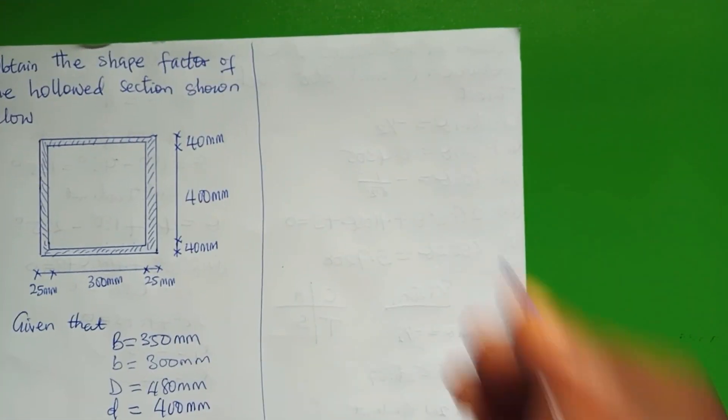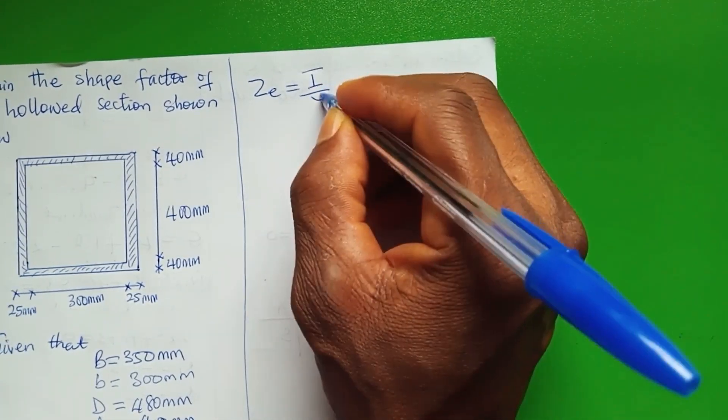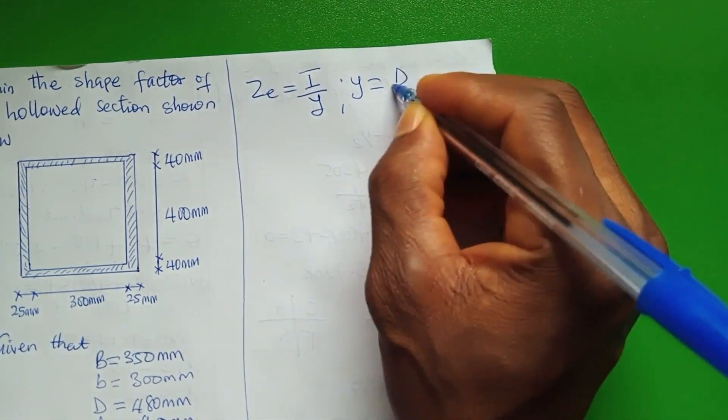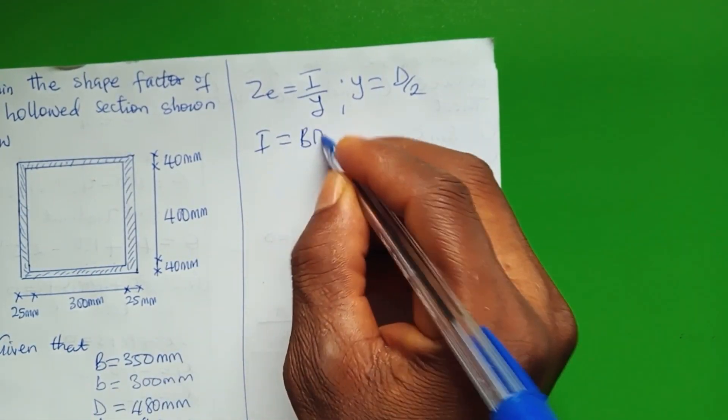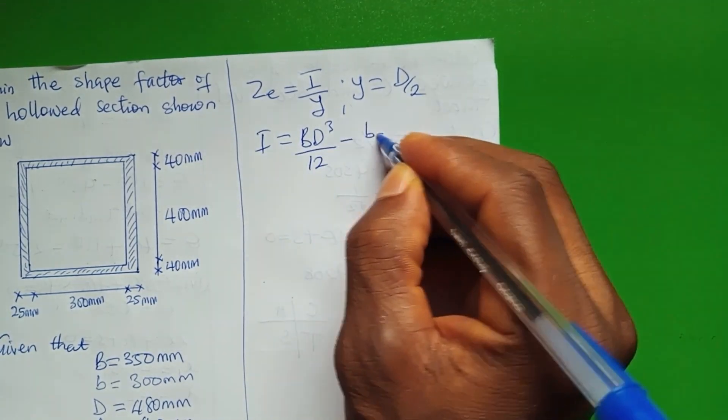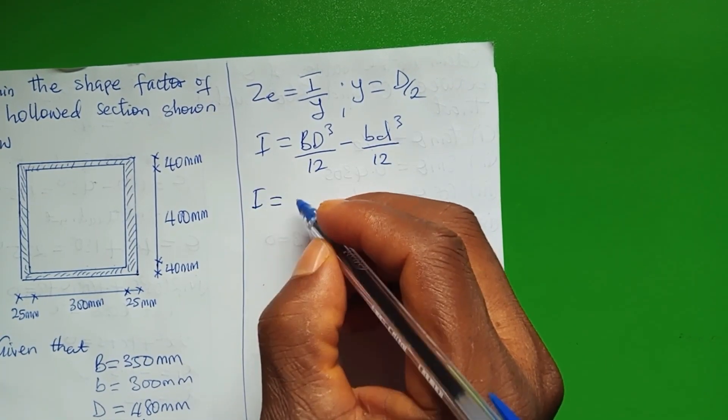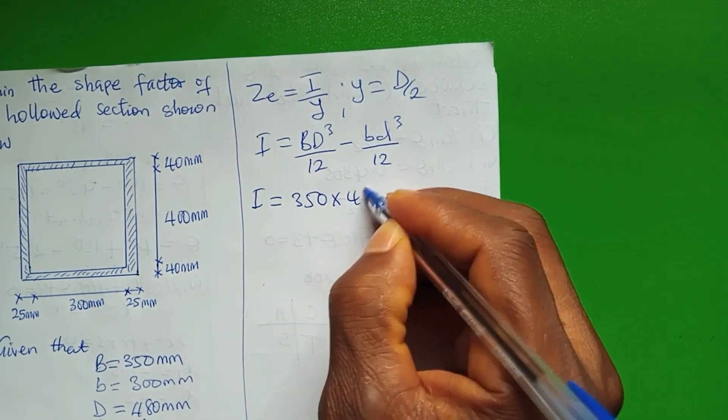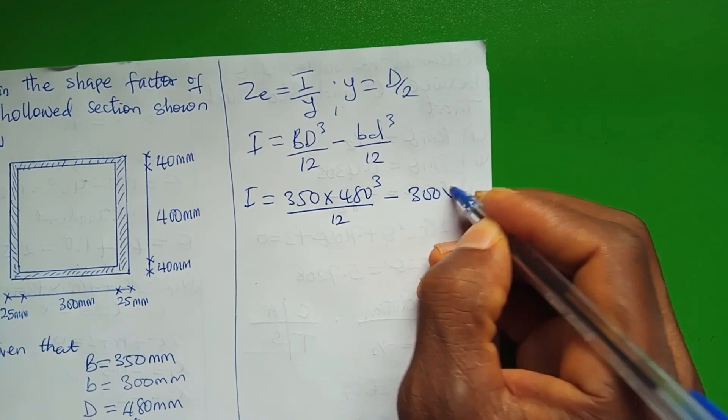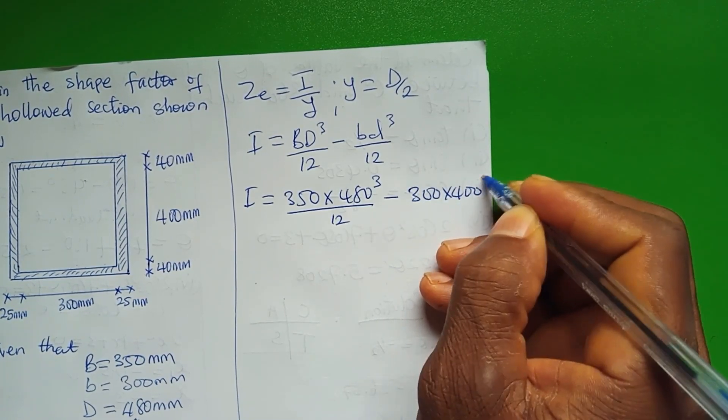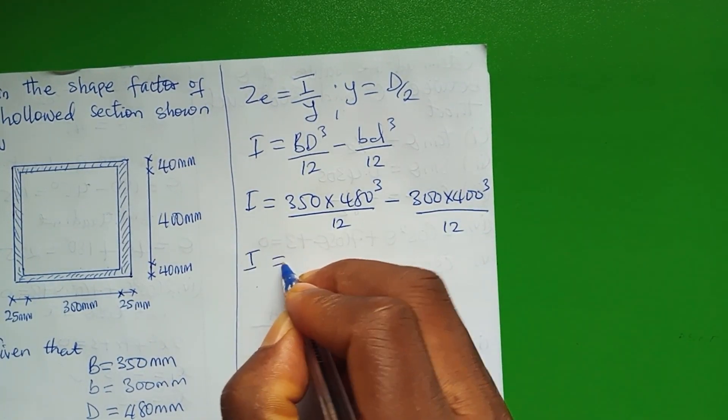For Ze, which is the elastic modulus, it's moment of inertia over y, where y equals d over 2. Our I equals BD cubed over 12 minus bd cubed over 12. That's 350 multiplied by 480 cubed over 12 minus 300 multiplied by 400 cubed over 12.